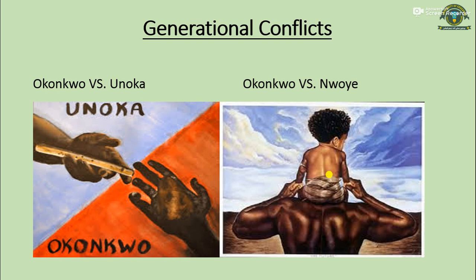Okonkwo built his reputation from the time he defeated the cat wrestler from another clan — that was when he gained the approval of his clan members. In order to maintain that rank, he became emotionless — apparently he felt emotions but didn't want to show them. He felt that if he ever let emotions overcome him, that would be a failure, because he had seen the extreme of emotion in the shape of his father Unoka.